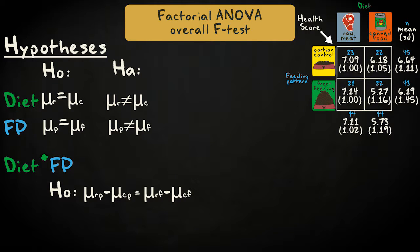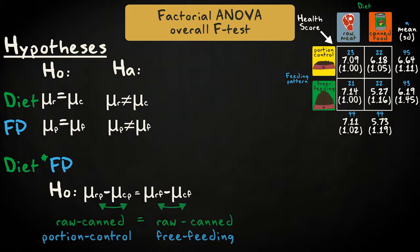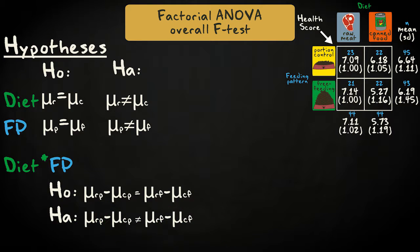The interaction effect specifies that the difference between means on one factor are the same for each level of the other factor, so the differences in population mean health for raw meat and canned food are expected to be the same for cats fed in controlled portions compared to free-fed cats. If this is the case, the effect of diet is not influenced by feeding pattern. The alternative hypothesis is that the differences are unequal for the portion control and free-fed cats.